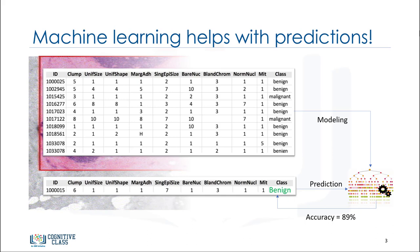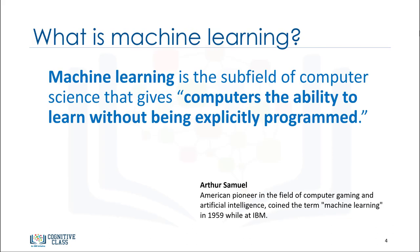Now, let me give a formal definition of machine learning. Machine learning is the subfield of computer science that gives computers the ability to learn without being explicitly programmed. Let me explain what I mean when I say without being explicitly programmed.